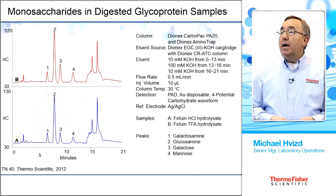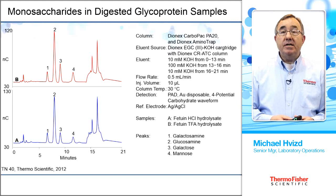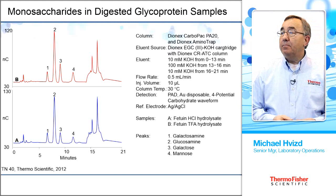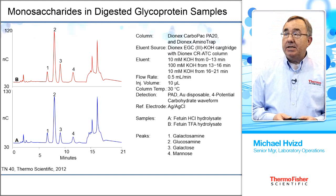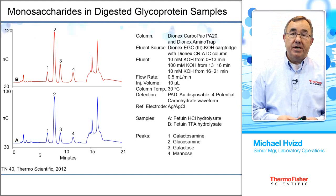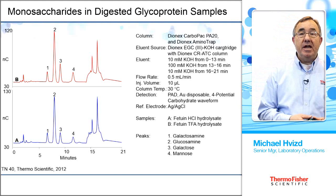Another glycoprotein sample here — monosaccharides in a digested glycoprotein. We're digesting with either hydrochloric acid or trifluoroacetic acid. Both digestions give us the four sugars of interest: galactosamine, glucosamine, galactose, and mannose. Toward the end, we have some other peaks eluting — these are the larger sugars which, since we're not interested in them, just come off in the wash. This wash cycle is used to make sure retention time stays stable over the long term.